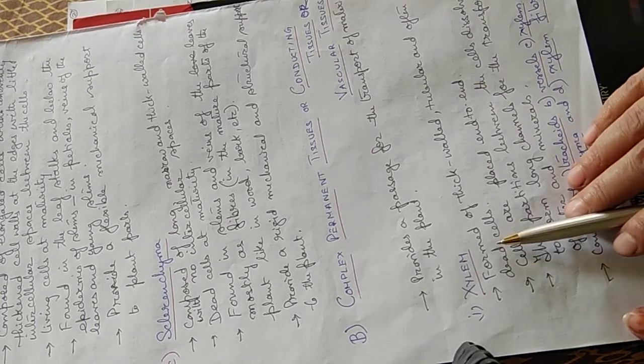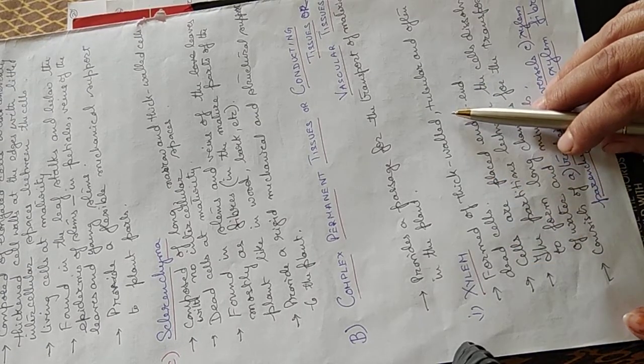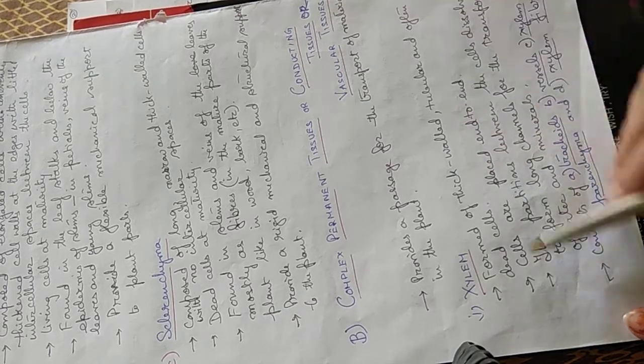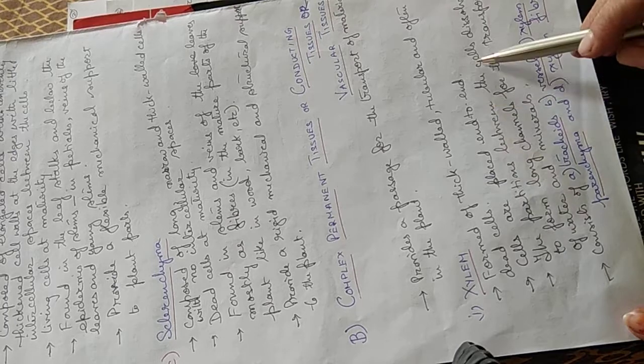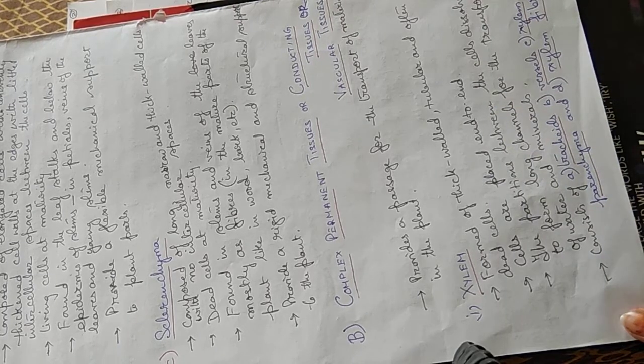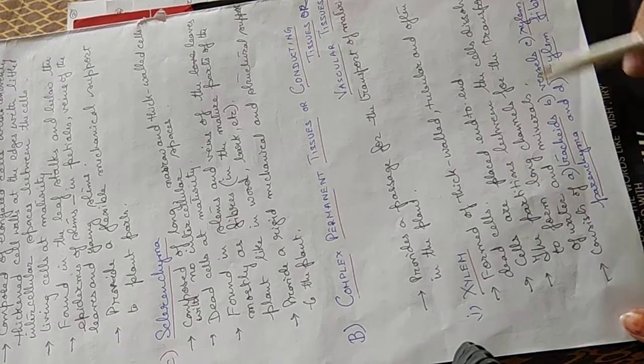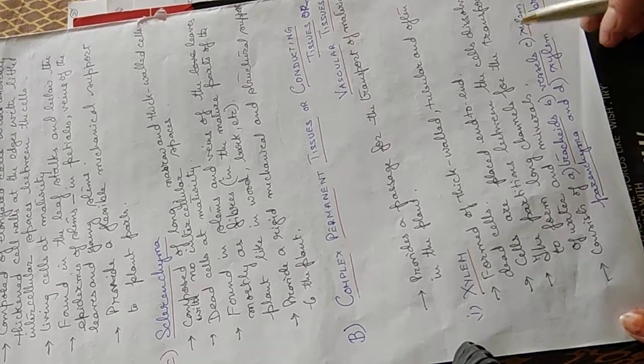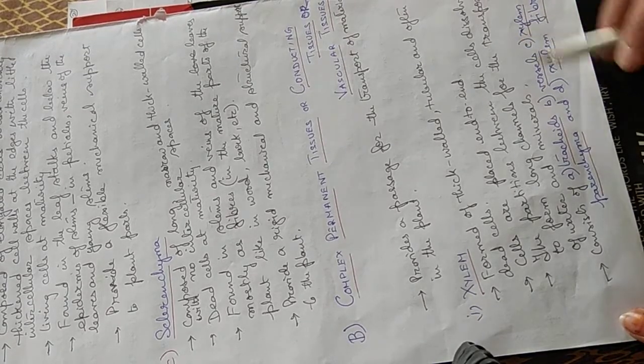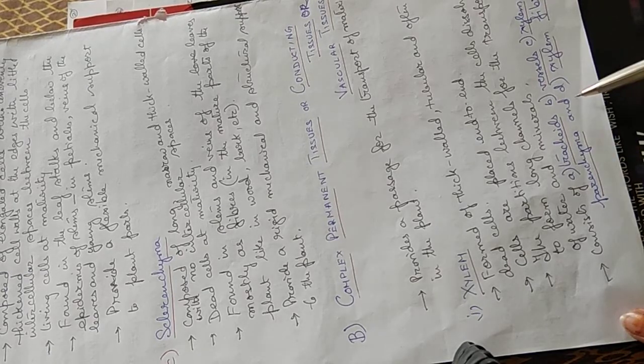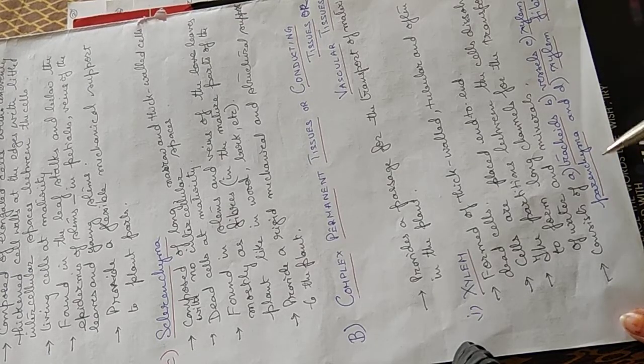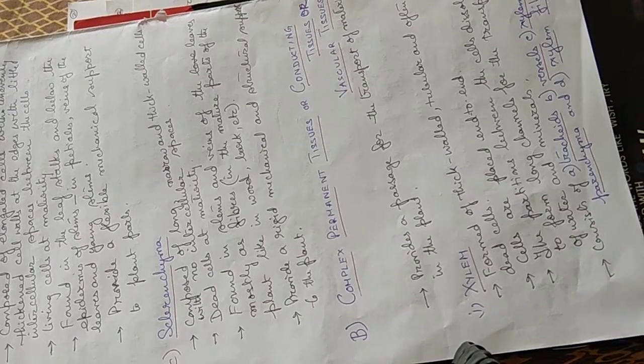Now, the xylem. They are formed of thick-walled cells and tubular and often dead cells. Their cells are placed end-to-end. The partitions between the cells dissolve to form long channels for the transport of water and minerals. They consist of tracheids, vessels, xylem parenchyma, and xylem fibers.